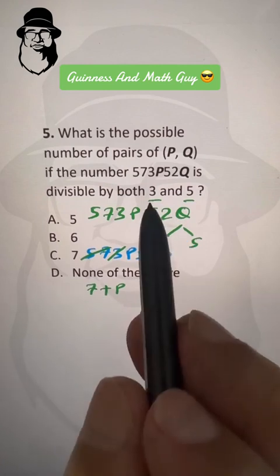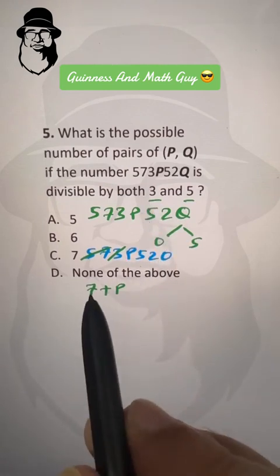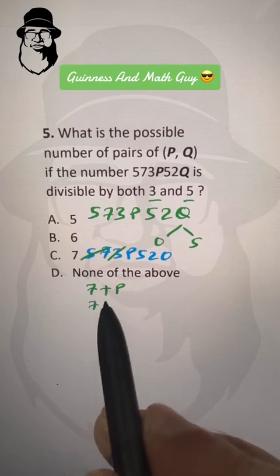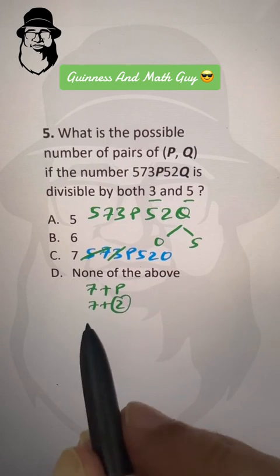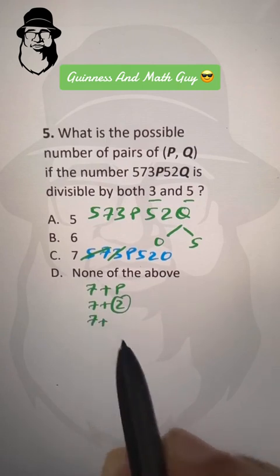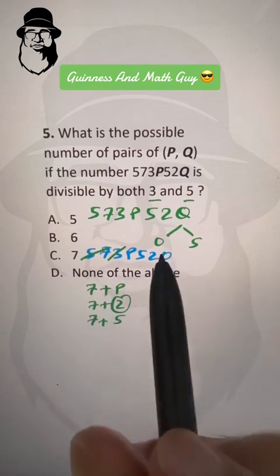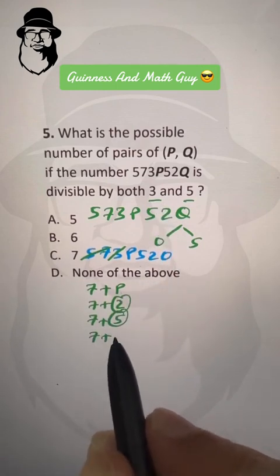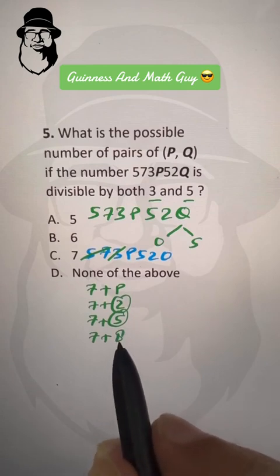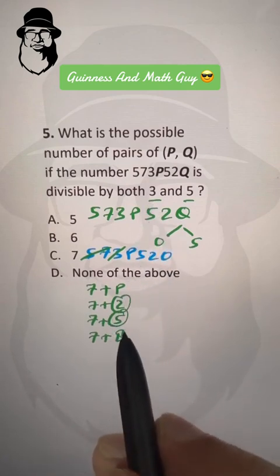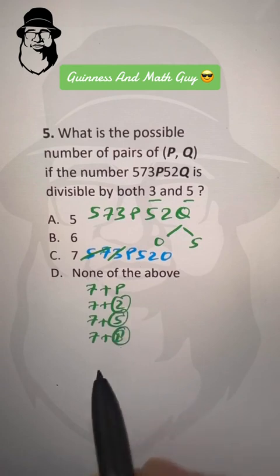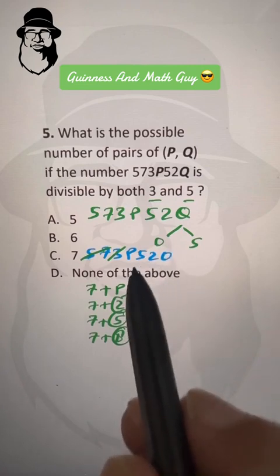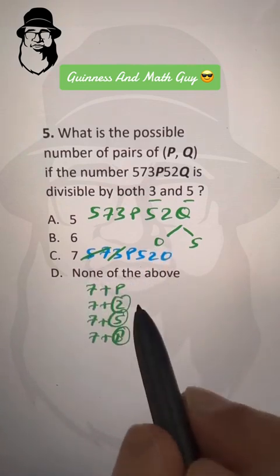The next number divisible by 3 after 7 is 9, so 7 plus 2 is 9, meaning p can be 2. Also, 7 plus 5 is 12, which is in the 3 times table, so p can be 5. And 7 plus 8 is 15, also in the 3 times table, so p can be 8. That gives us three options when q is 0: p can be 2, 5, or 8.